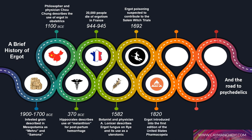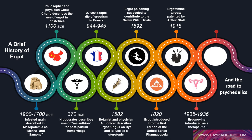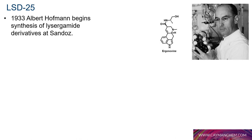In 1820, ergot was introduced into the first edition of the United States Pharmacopoeia as a sanctioned therapy for postpartum hemorrhage. Ergotamine tartrate was patented by Arthur Stoll in 1918, kicking off industrial production of ergot alkaloids as pharmaceuticals. In 1935, ergonovine was introduced as a therapeutic, and its analog methyl ergometrine is still used today.